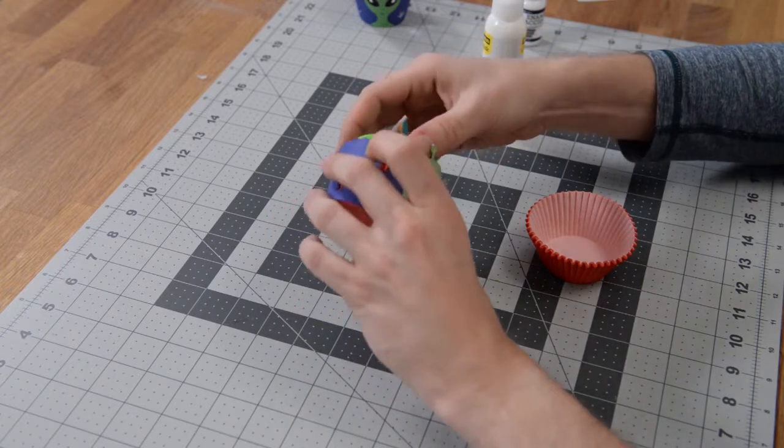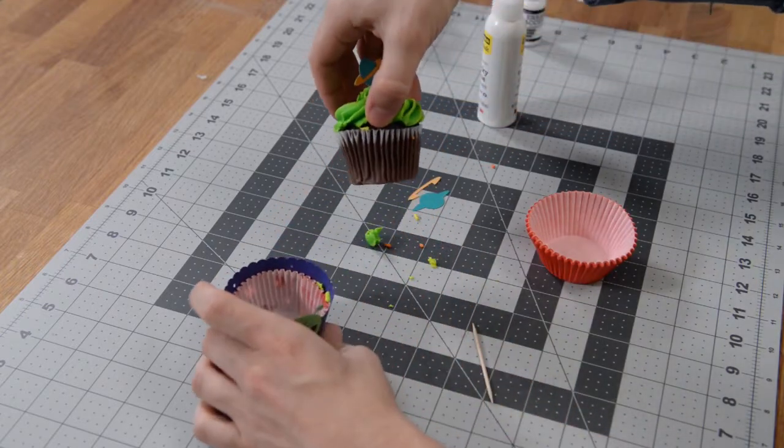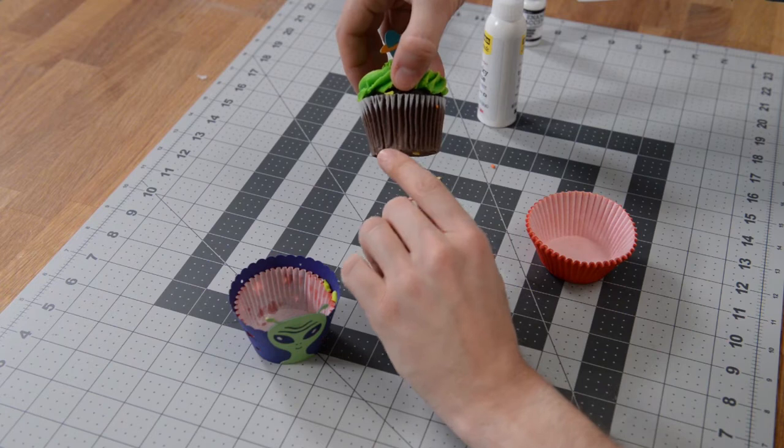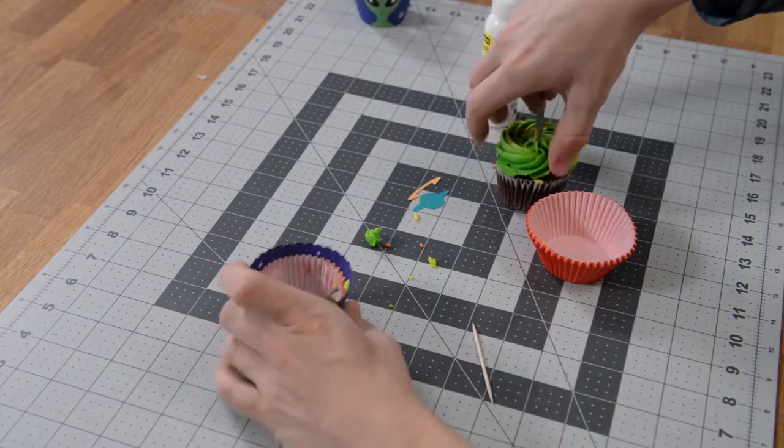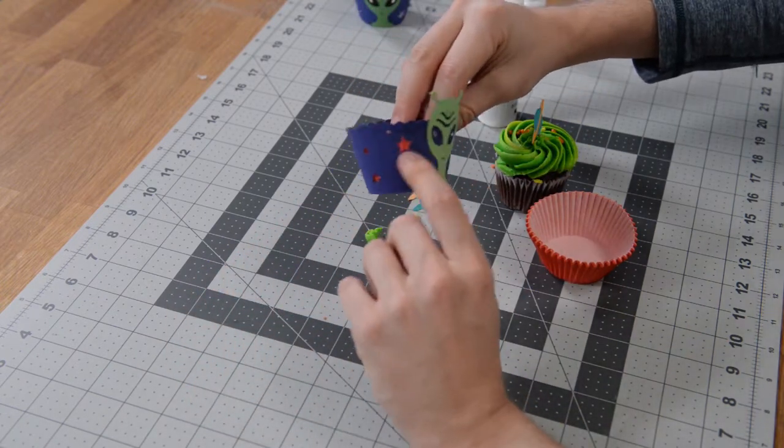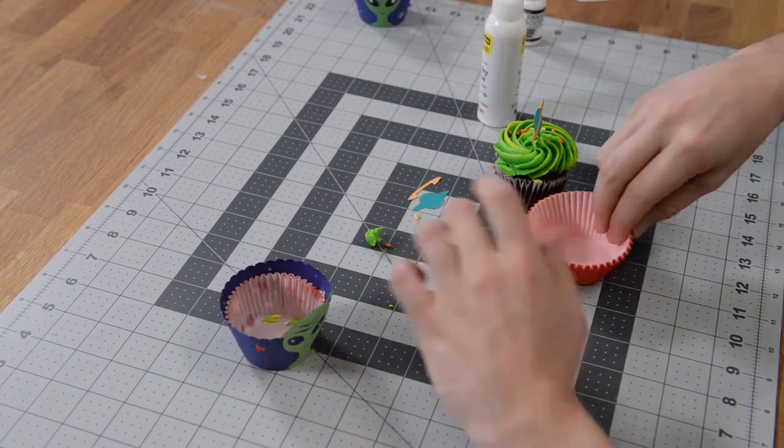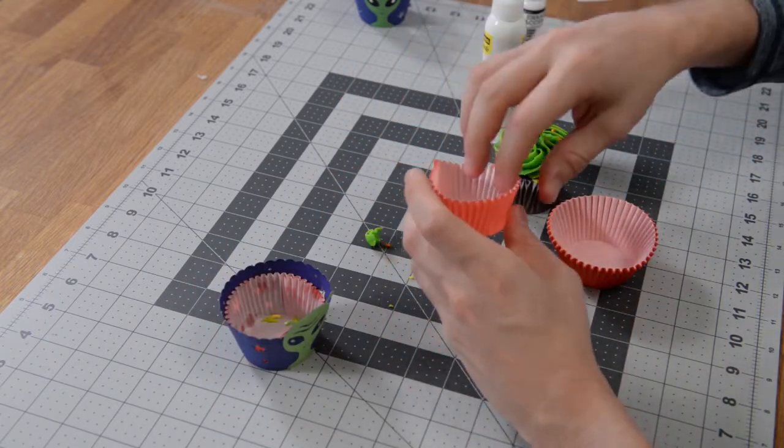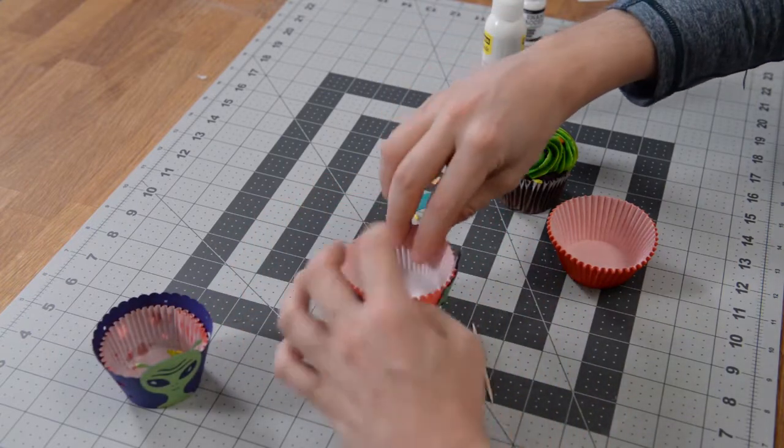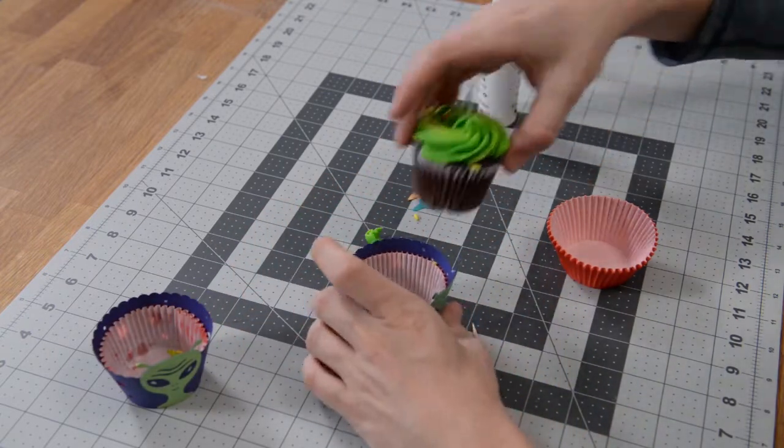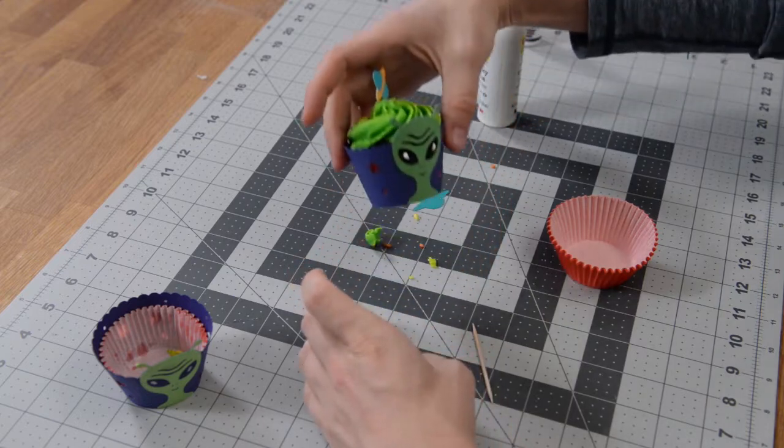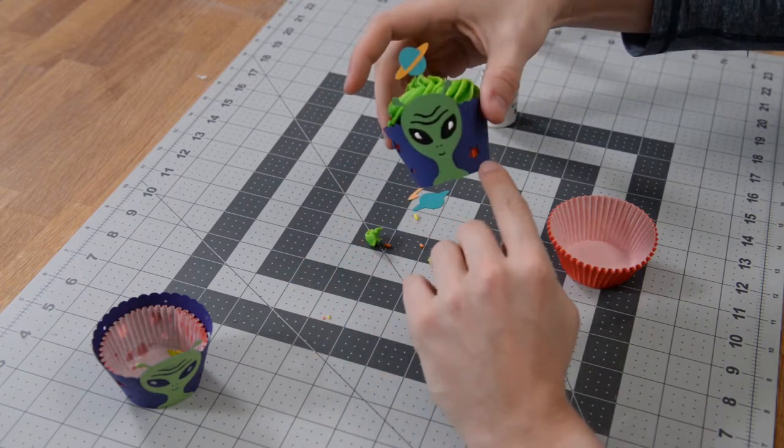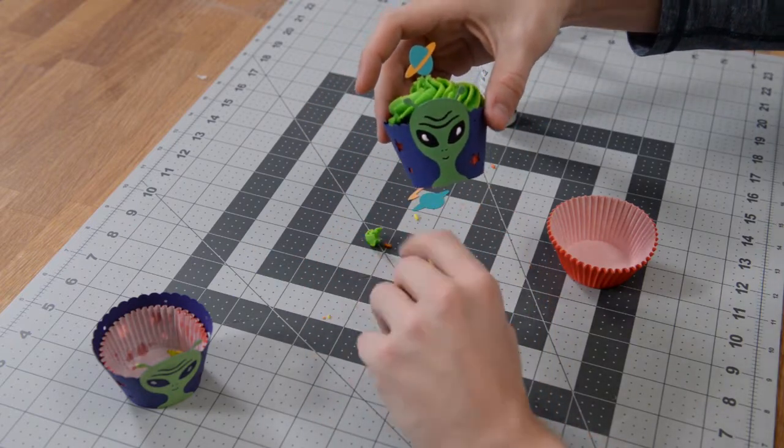As you can see here, the actual cupcake came with just a clear liner. To give this really cool look here, I actually at Joann found some red liners that I put inside the cupcake first, and then I put the actual cupcake in there. That kind of gives it a cooler look, I think. So it's just a little tip there that will make this even cooler for you.